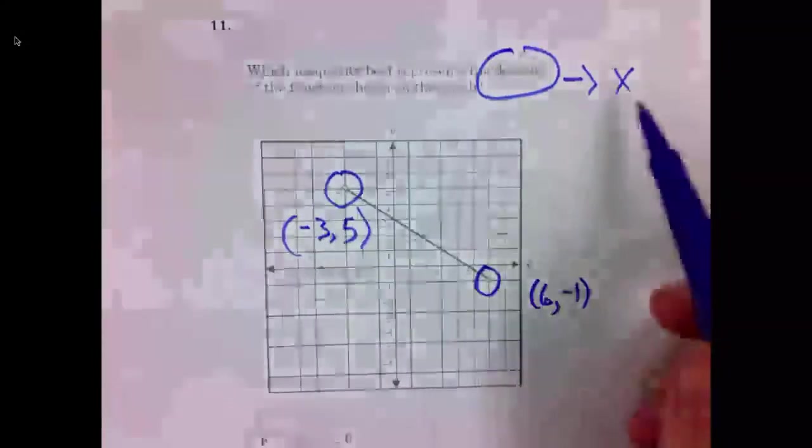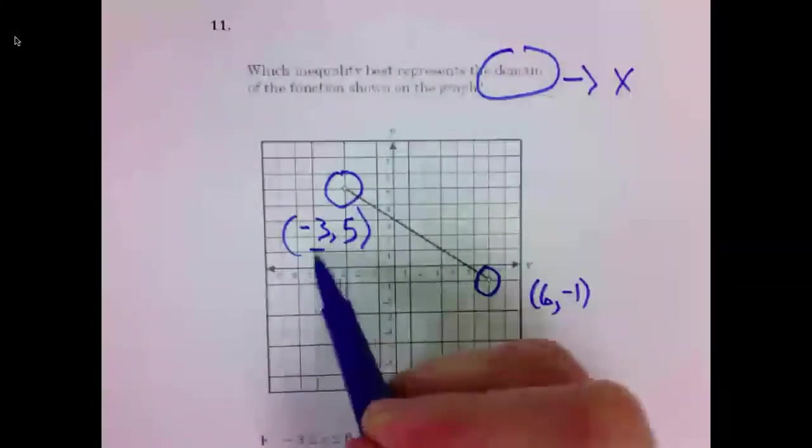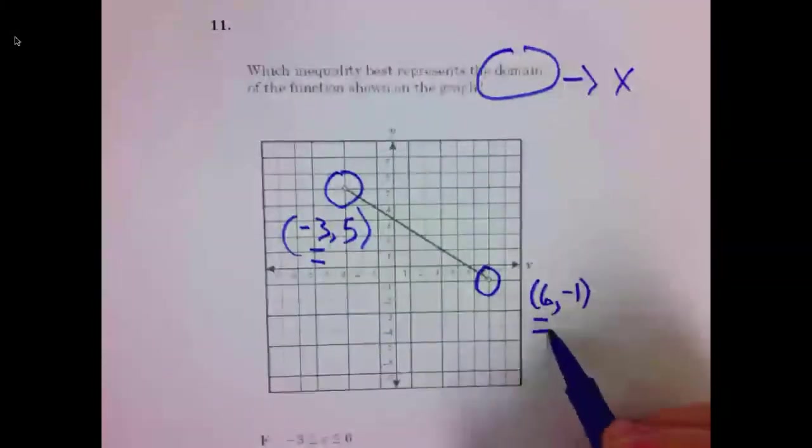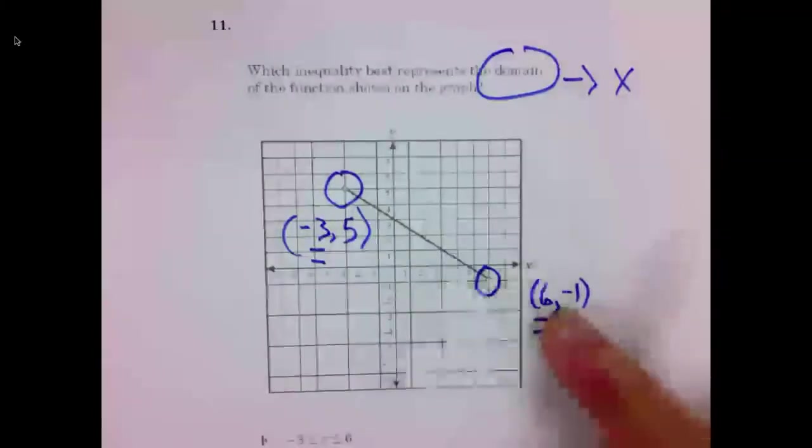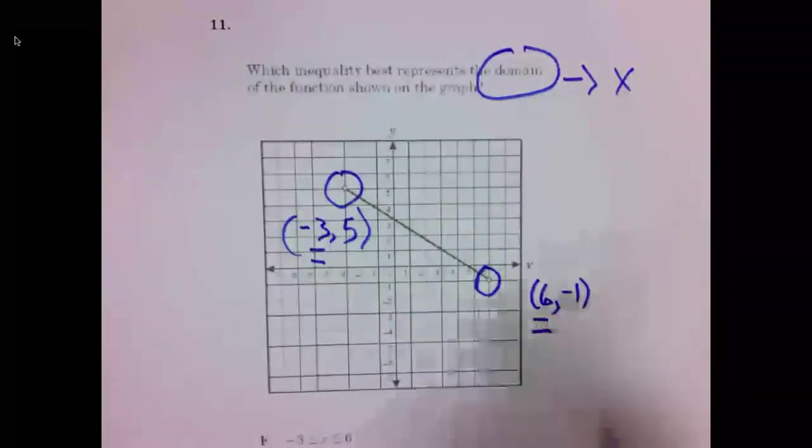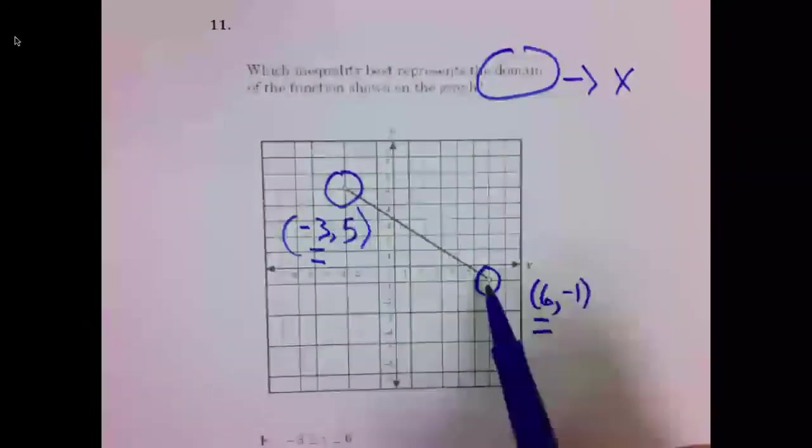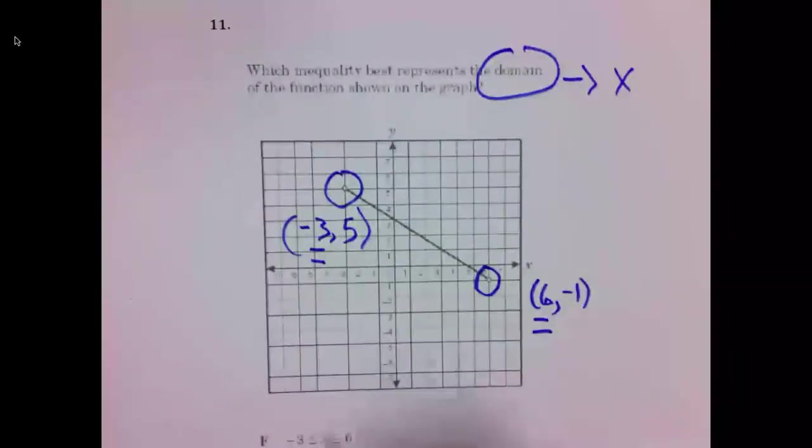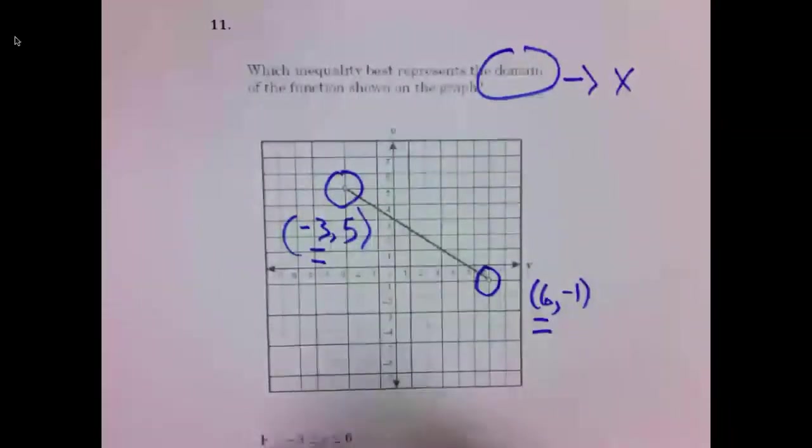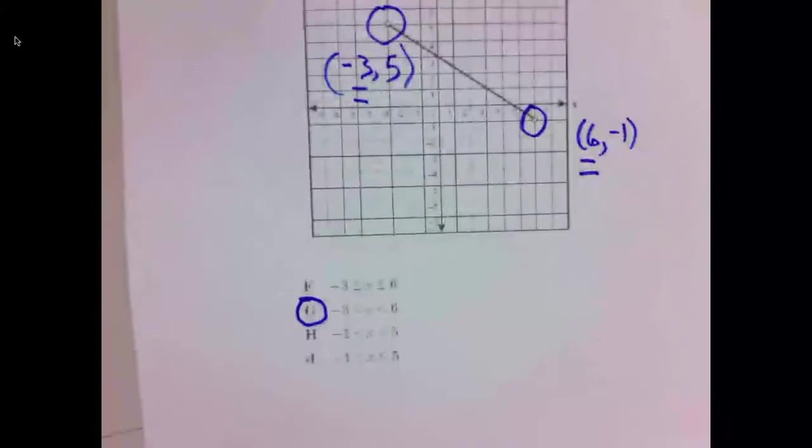We are considering the domain, the X. It goes from negative 3 to positive 6. From negative 3 to positive 6. And we do not need an equal to portion because they both have empty circles. From negative 3 to positive 6. 11 is G.